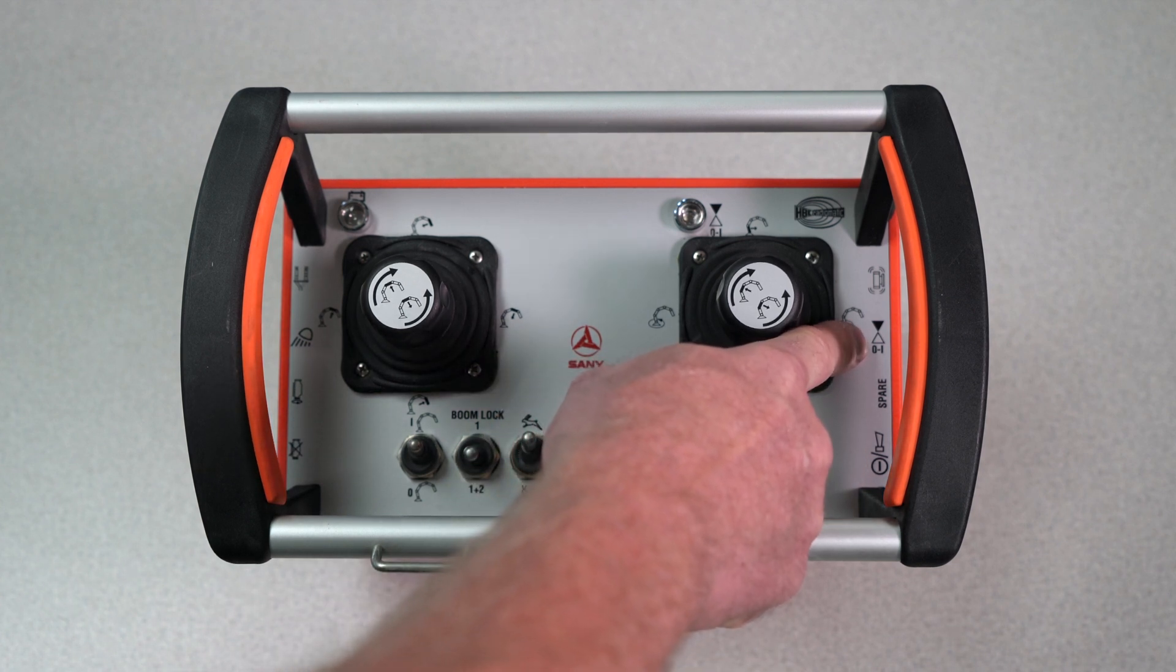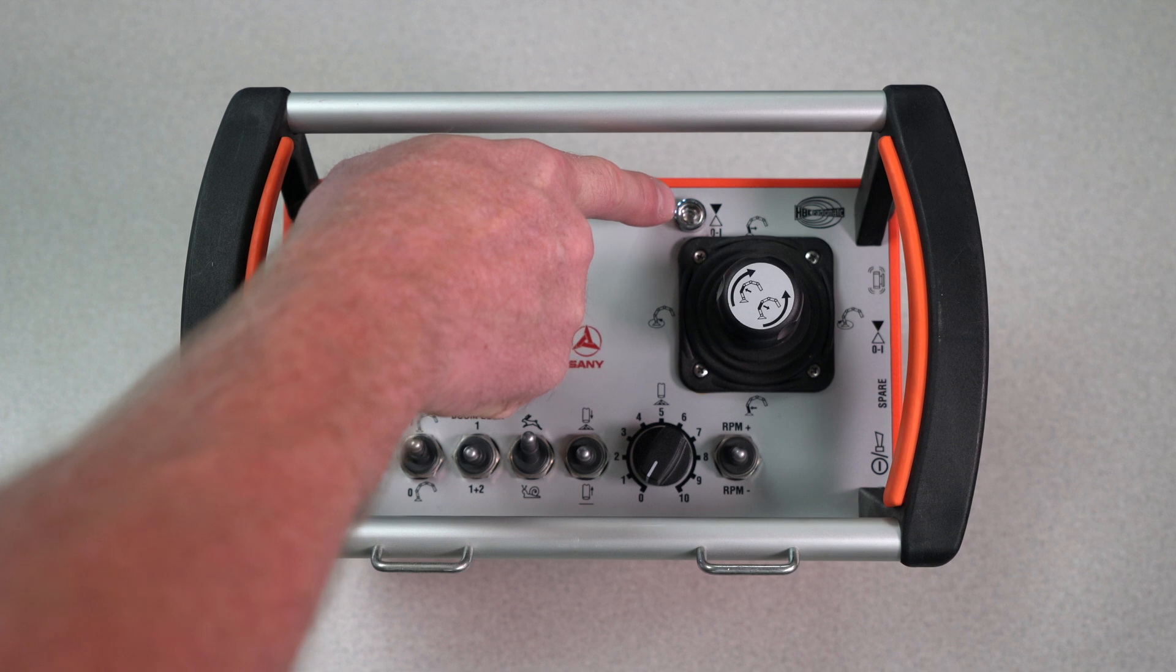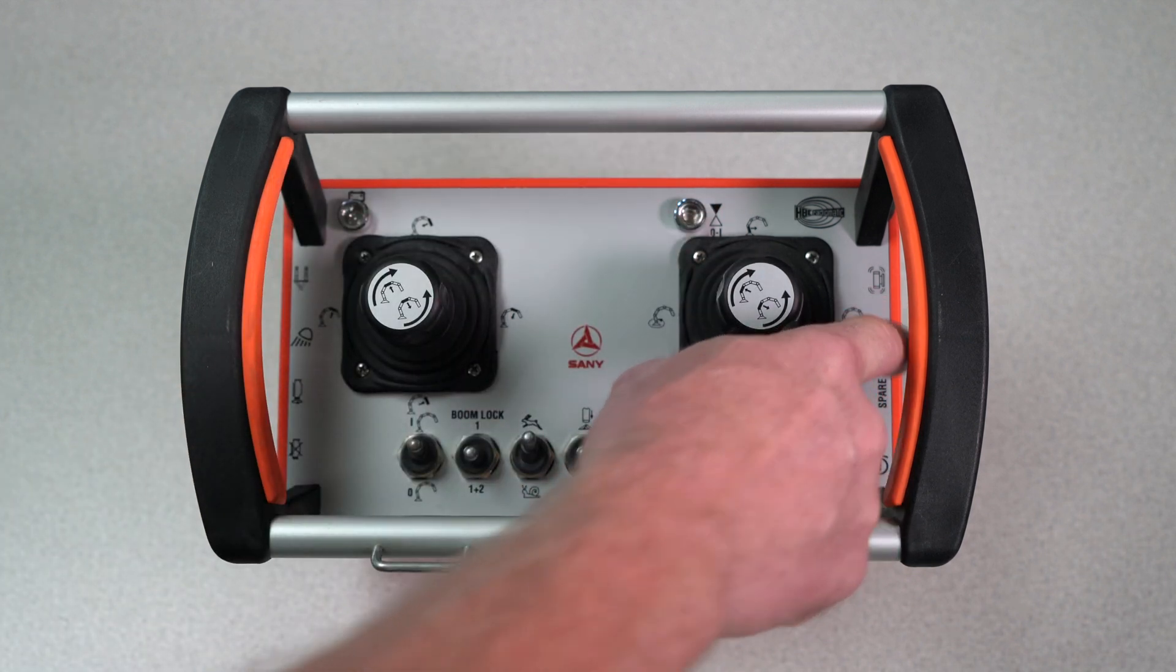We have the push button for your squeeze valve on and off. When your squeeze valve is on, your green LED will be illuminated. And then, of course, our vibrator button.